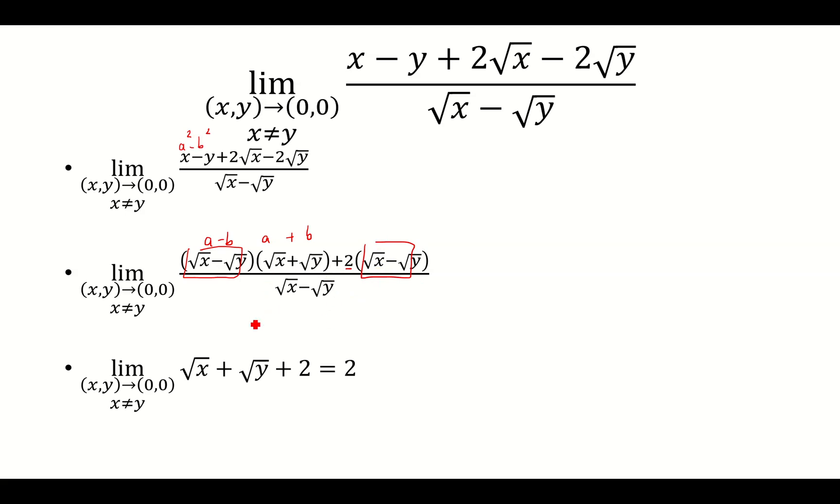And I'm going to be left with square root of x plus square root of y plus 2. And the denominator will have the square root of x minus the square root of y.